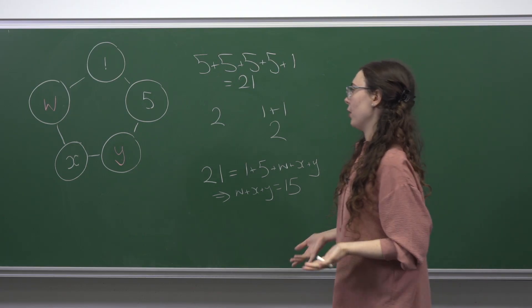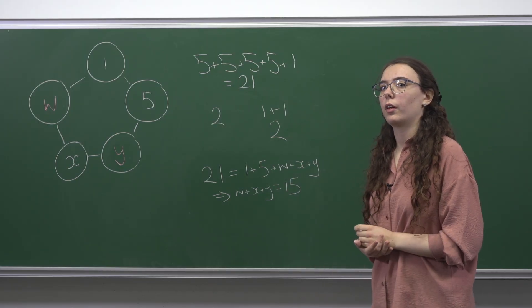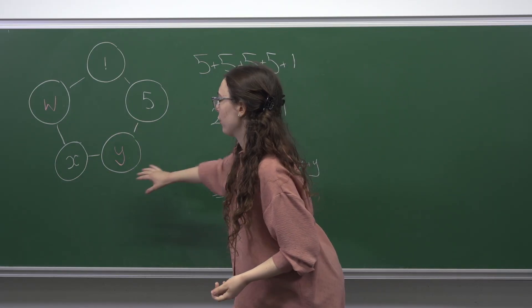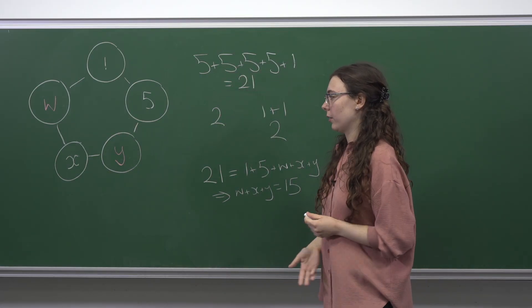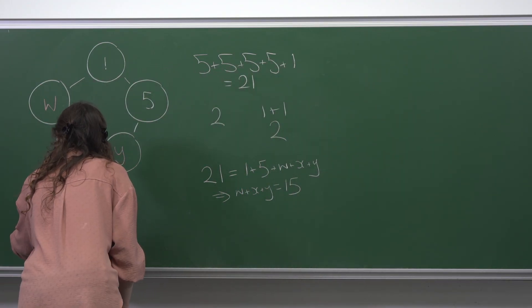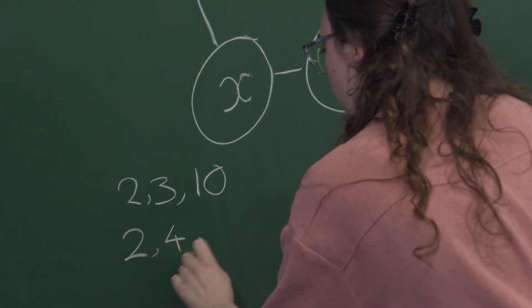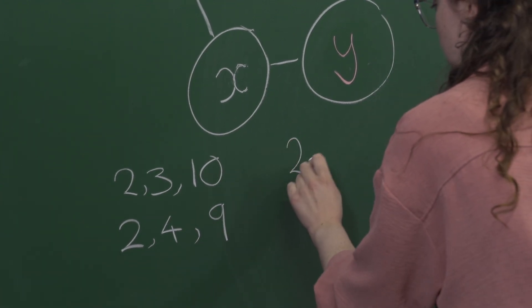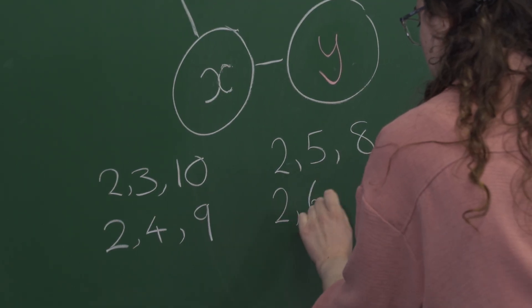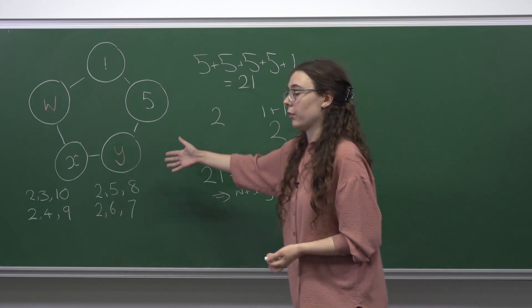We now have two pieces of information: the sum of the three unknowns is 15, and one of them is 2. Ignoring order for now, the possible sets of values are: {2, 3, 10}, {2, 4, 9}, {2, 5, 8}, or {2, 6, 7}. These are the only possibilities since all numbers must be distinct.